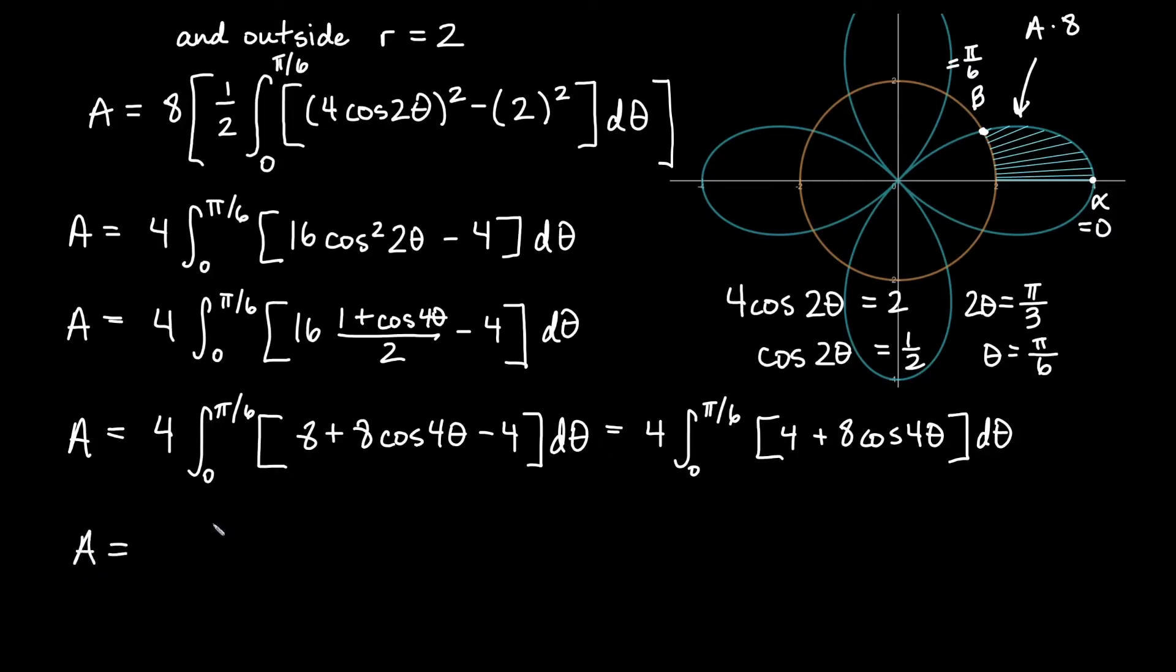Our area is going to equal 4 times, integrating 4 d theta will give us 4 theta plus if we integrate cosine 4 theta that'll give us sine 4 theta but then the reciprocal of 4 will come out. So 1 fourth comes out, 8 times the fourth, that would give us 2 there. And we'll have sine 4 theta. And we will evaluate from 0 to pi over 6.